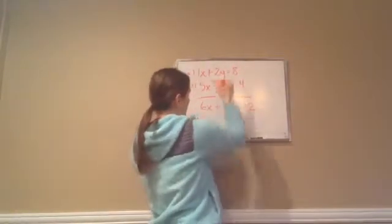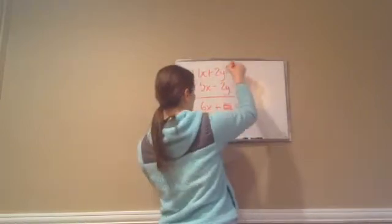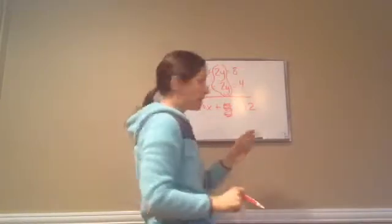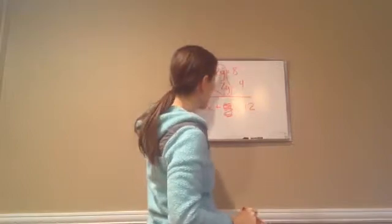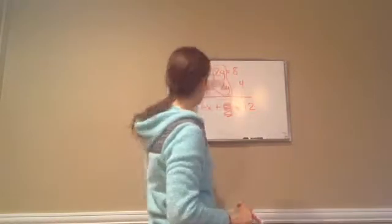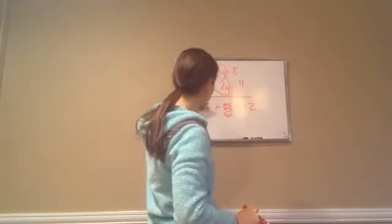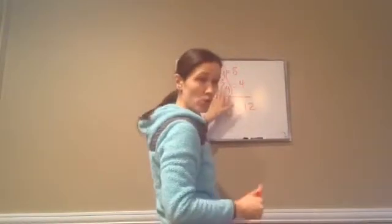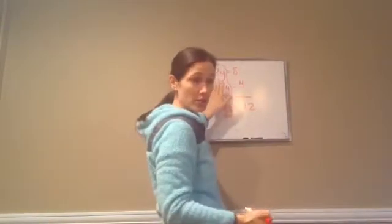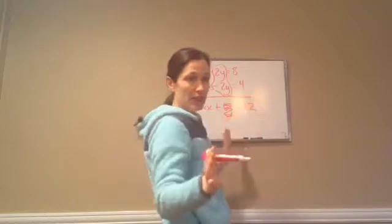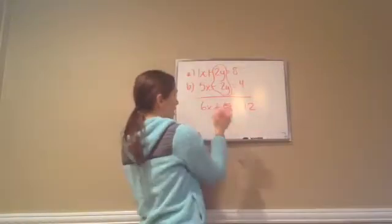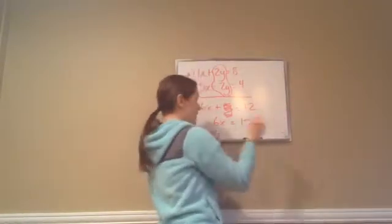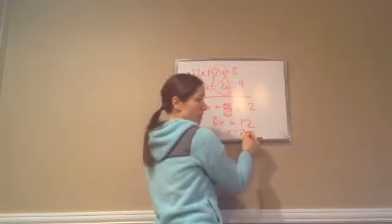I'm going to put a 1 in front of the x. We take this 5x and this 1x and make it 6x. Then we take 2y plus negative 2y, which gives us 0y — they cancel out. And 8 plus 4 is 12. The only reason I can add them like this is because I noticed right away we can get rid of the y by adding. So now I get 6x equals 12, and we know that x equals 2.